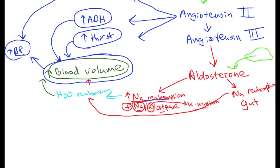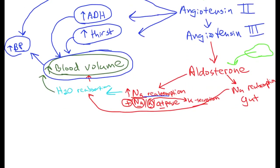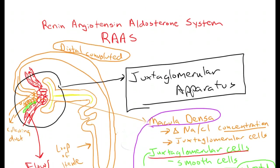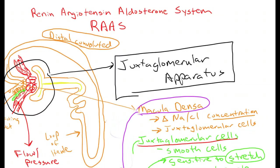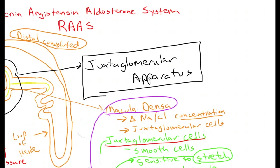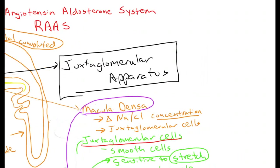This ends my discussion of the renin-angiotensin-aldosterone system and the juxtaglomerular apparatus. If you have any questions, please feel free to leave them in the comments and I'll answer if I'm able to. I'm also going to put up my links as I usually do, so you have quick and easy access to my other videos. I hope to see you in another video soon.